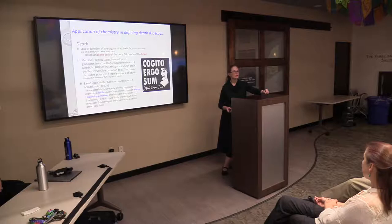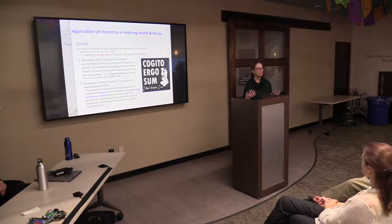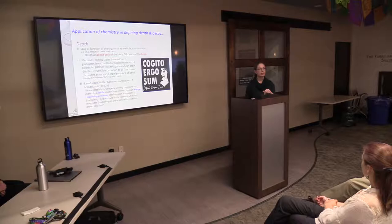Building upon that, papers came out — still being debated — that death can be loss of function of the organism. That could be loss of function of the cells, so all cells of the organism die. Or it could be loss of the brain cells. Someone who's comatose is not able to use neurological function to communicate in any meaningful way — but that is not death of those cells, so we don't define them as dead.